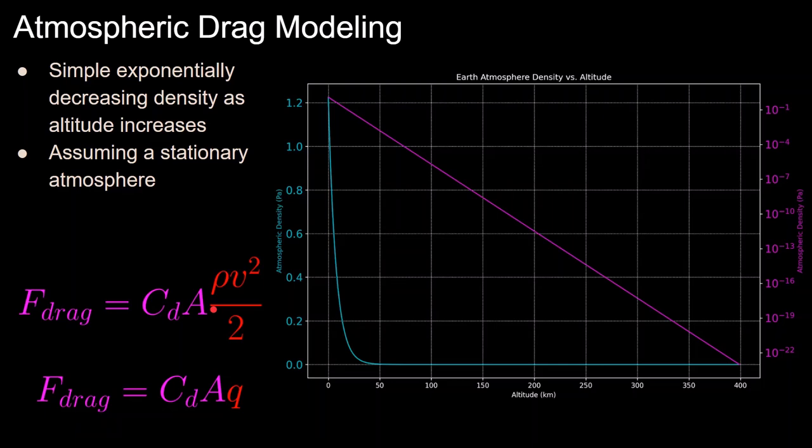So with all of that, we can get to the force due to drag is equal to CD times A times rho v squared over 2, where this rho v squared value is the dynamic pressure.